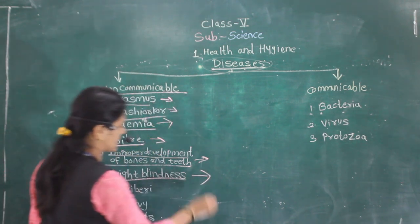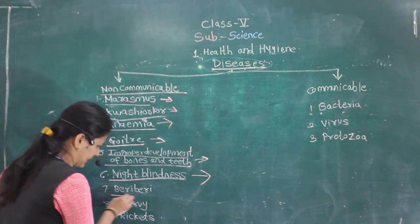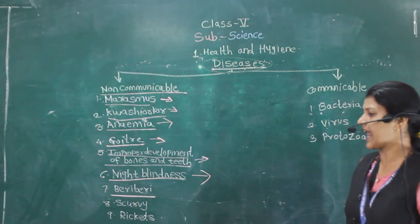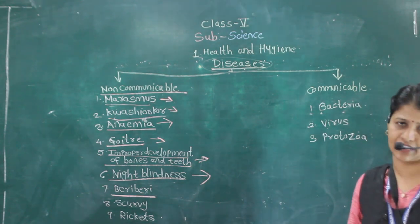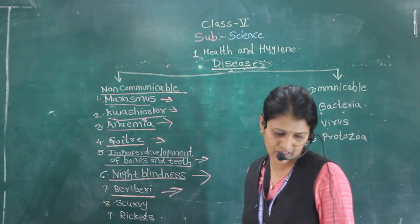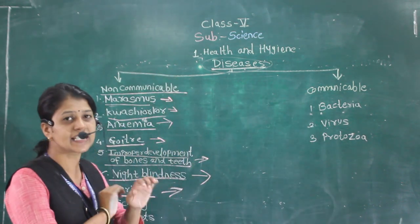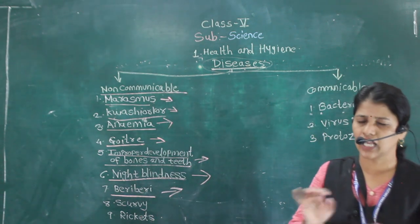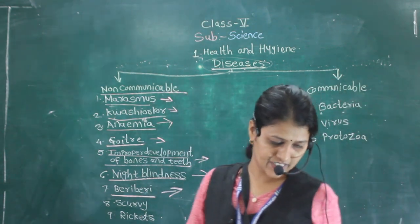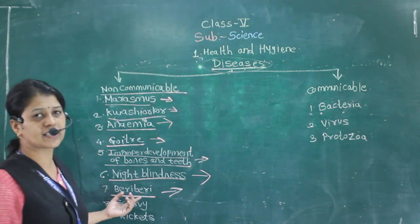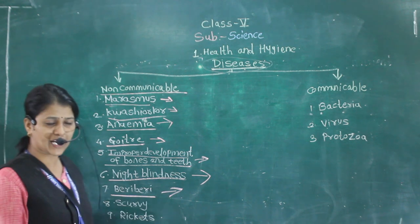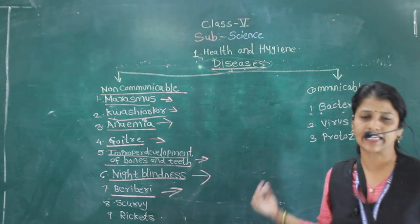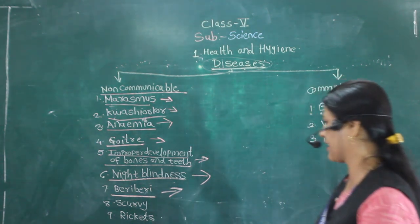Next is beriberi, caused due to the lack of vitamin B. The skin becomes dry and scaly — like during summer when your skin becomes totally dry. There is extreme weakness seen in such a person. The person should be given milk and egg.